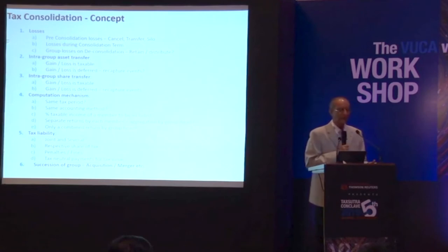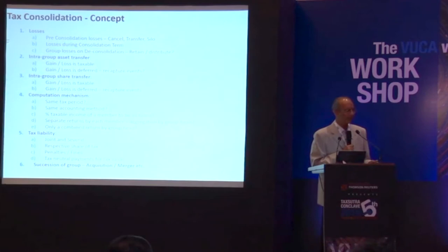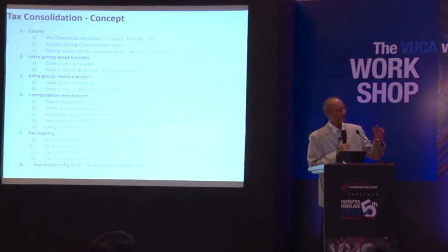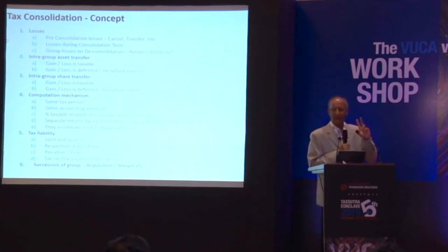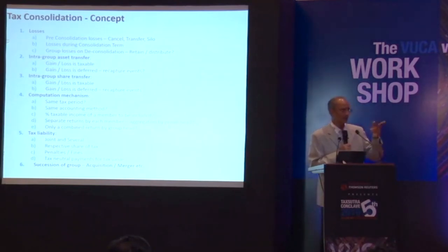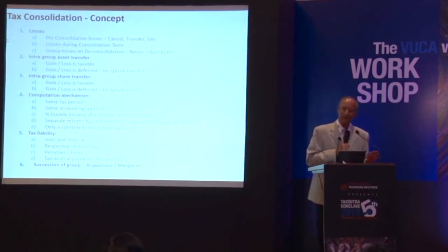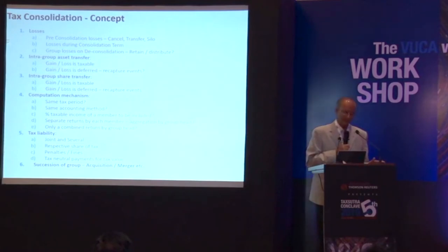Tax liability in a consolidated regime is joint and several. There will be a parent or head company — usually the topmost company — that bears the amount of taxes. Governments may give a leeway that taxes can be attributed to respective members according to their share of income. For recovery and enforcement purposes, liability may also be attributed to subsidiaries. On succession, if the parent company is acquired by another, tax neutrality is maintained — it is like amalgamation of one group with another, and there will be automatic tax neutrality.